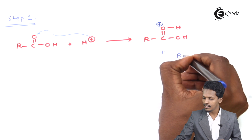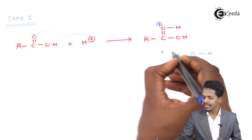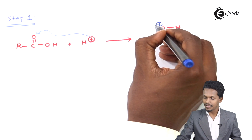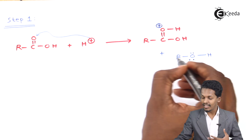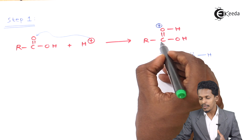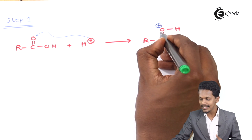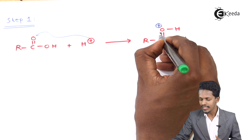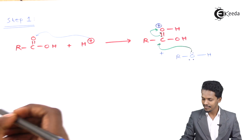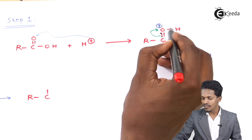To stabilize this intermediate, we introduce the alcohol R'OH. The oxygen of the alcohol is electronegative and attacks the electropositive carbon atom, shifting two electrons to the positively charged oxygen atom.